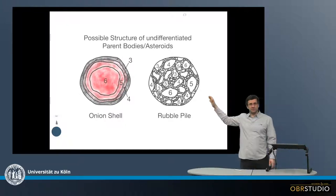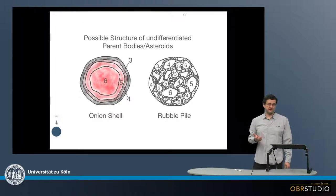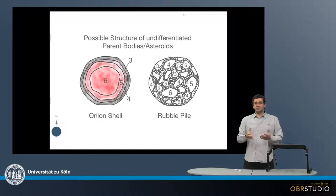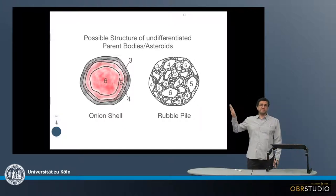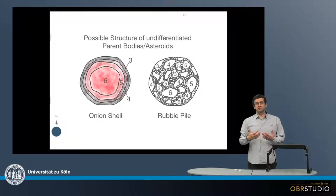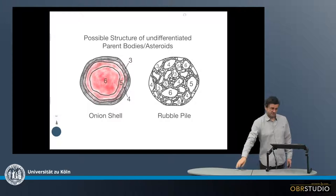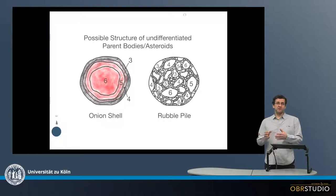The onion shell model on the left is what we would probably first imagine — how these asteroids developed. They also got hot, and then there was a thermal gradient from the center towards the border of these asteroids, which means that more metamorphic overprinting happened in the core than at the border. We classify the meteorites according to their petrologic type, which means the degree of metamorphism they experienced.